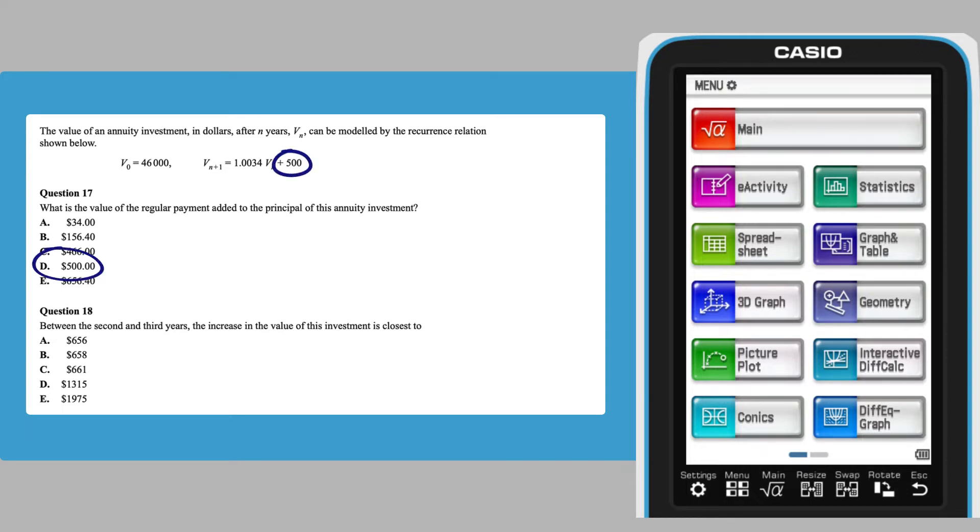The answer to question 18 can be found by using the recurrence relation to generate the value of this annuity for the first few years. To do this, open the ClassPad's Sequence app. You'll probably need to go to the second screen of the apps to do this.